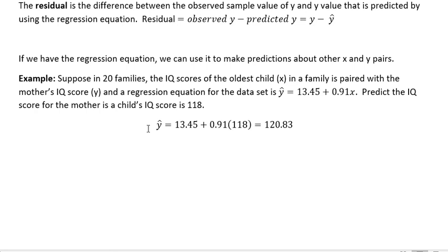We just take the regression equation and we replace the x with the x we were just given, because x represents the child's score. So we replace that with 118, plug that into our calculator, and we get a prediction for that particular child. The mother's IQ score we would predict would be about 121. So we can just plug a value in to make that prediction.